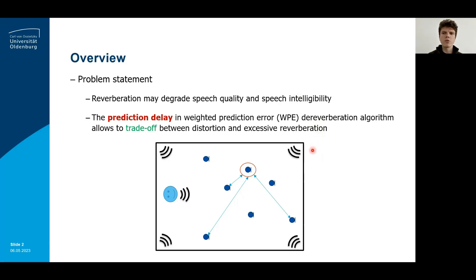When recording a speech source using microphones inside a room, reverberation due to acoustic reflections may degrade the quality and intelligibility of the recorded speech. Hence, effective dereverberation is required for many applications. A popular multi-channel dereverberation algorithm is the Weighted Prediction Error, or WPE algorithm, which uses a fixed prediction delay to trade off between distortion to the dereverberated output and a large amount of reverberation remaining in the output signal.